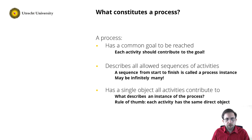So what constitutes a process? A process describes all allowed sequences of activities to reach a common goal, and each activity should contribute to this goal. A sequence of activities from the start of the process is called a process instance. This process instance describes a single execution of the process. Note that a process can have loops, and thus a process can describe infinitely many process instances.